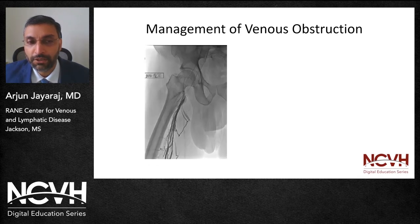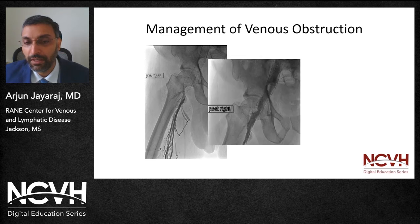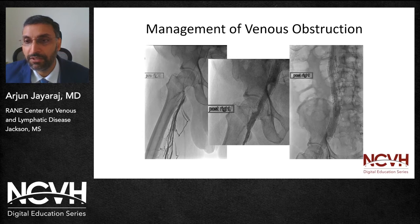One can also encounter acute occlusion of a previously placed stent. This is an example of a patient who had this precise presentation. You'll notice the severe post-thrombotic changes in the mid-thigh, as evidenced by the multiple collateral veins that exist in the thigh, and there is no flow within the stent. Pharmacomechanical thrombectomy was carried out in a similar manner, and this is the completion venogram. This patient has been stented all the way to the level of the hepatic vein confluence and has a patent channel.